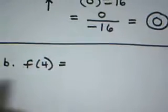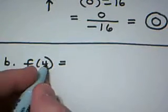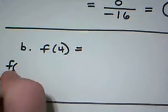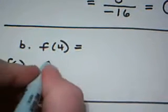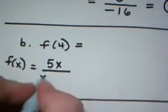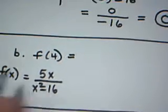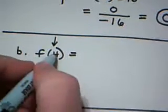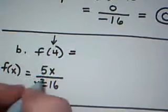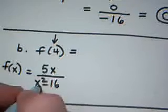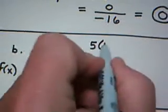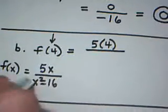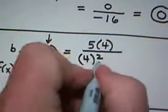On part B, I'm asked to find f of 4. Now, let's remember, sort of a little snapshot picture here. The function was f of x equals 5x divided by x squared minus 16. We're asked to find f of 4. 4 is an input value. It's a domain element. Every place you see an x in this function, you plug in a 4. 5 times 4 on the top, and on the bottom we would have 4 squared minus 16.